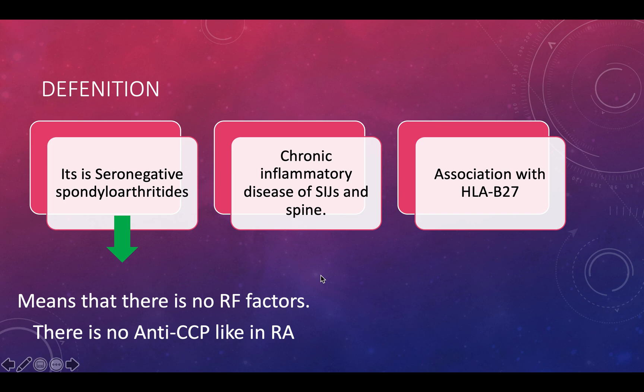Rheumatoid arthritis is a seropositive type of spondyloarthritis. Ankylosing spondylitis is a chronic inflammatory disease of the sacroiliac joint and the spine, whereas rheumatoid arthritis usually affects distal and proximal PIP, MCP joints — basically joints of the fingers and of the ankles.